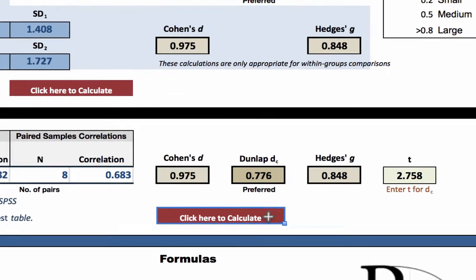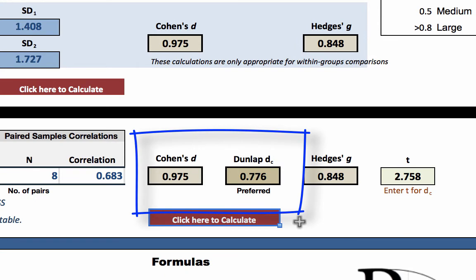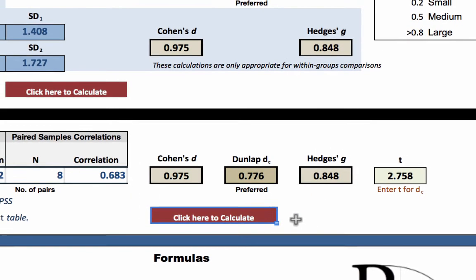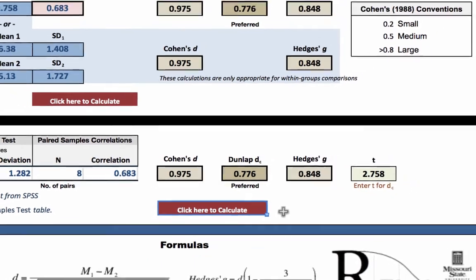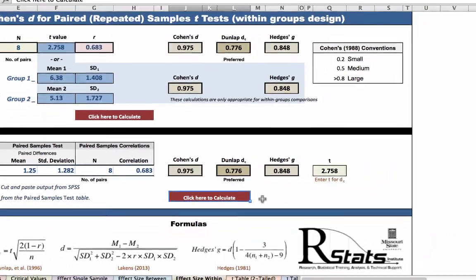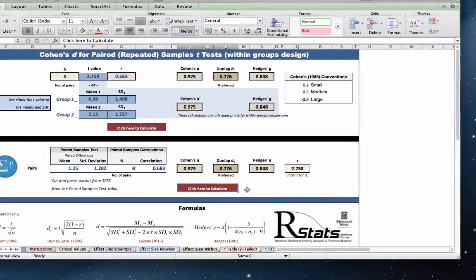You can see that the Cohen's D value here, 0.9, is much larger than the Dunlap corrected value. When we analyzed this same data with an independent samples t-test, Cohen's D was 0.79, so Dunlap's correction for paired samples, 0.78, is much closer. Although I am going to report Cohen's D in this lesson, I would definitely report the corrected effect size by Dunlap, 0.78, for a publication.